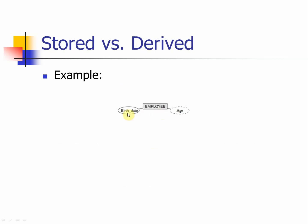In the ER diagram for the employee, we use a dashed oval to indicate a derived attribute — so age is shown with a dashed oval. Make sure you understand this: some students incorrectly draw a line from birthday to age, suggesting age is a sub-part of birthday using the composite attribute concept — that is incorrect. You simply need to create a separate independent dashed oval for the derived attribute age. When we get to implementation, we will not actually create an age attribute for employee; we will handle that as a function.